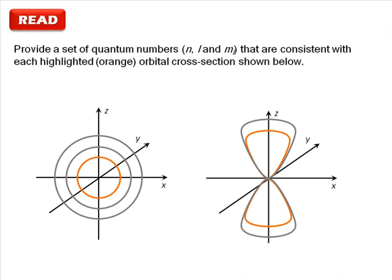Always start by reading the question. This question asks us to consider the size and shape of atomic orbitals with respect to their corresponding quantum numbers. The two particular orbitals they ask us to examine are highlighted in orange.